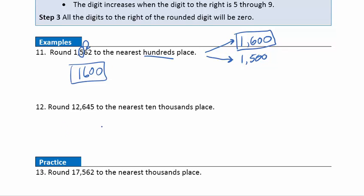Question 12: round this number to the nearest ten thousands place. Let's find the ten thousands digit: ones, tens, hundreds, thousands, ten thousands — so the one is the digit we're rounding. The digit to the right is a two, so that means we keep this one the same. After the digit we're rounding, everything goes to zero. So we're going to get 10,000 for our rounded value.